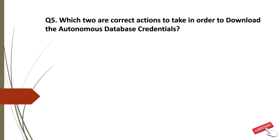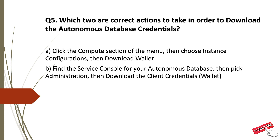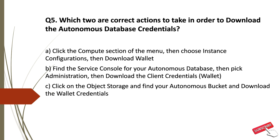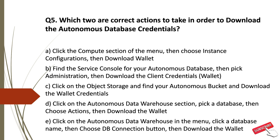Question 5: Which two are correct actions to take to download Autonomous Database credentials? Option A: Click the compute section of the menu, then choose instance configuration, then download wallet. Option B: Find the service console for your Autonomous Database, then pick administration, then download the client credentials. Option C: Click on object storage, find your Autonomous Bucket, and download the wallet credentials. Option D: Click on the Autonomous Data Warehouse section, pick a database, choose action, then download the wallet. Option E: Click on Autonomous Data Warehouse in the menu, click a database name, then choose the DB connection button, then download the wallet.